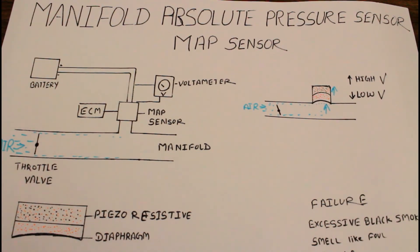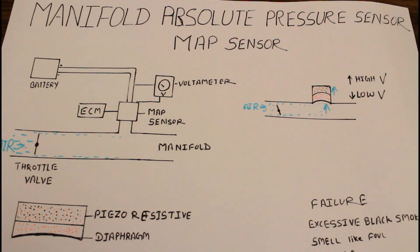In the condition of MAP sensor failure, excessive black smoke can be produced and there can be a foul smell or mileage problem. So we have to continuously check the sensor for the proper working of our engine.